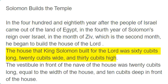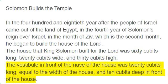The house that King Solomon built for the Lord was 60 cubits long, 20 cubits wide, and 30 cubits high. The vestibule in front of the nave of the house was 20 cubits long, equal to the width of the house, and 10 cubits deep in front of the house.